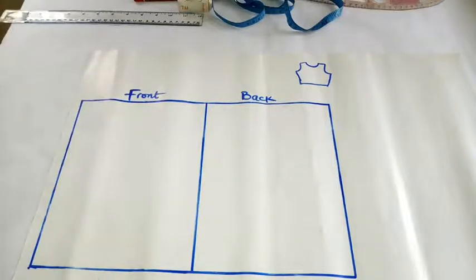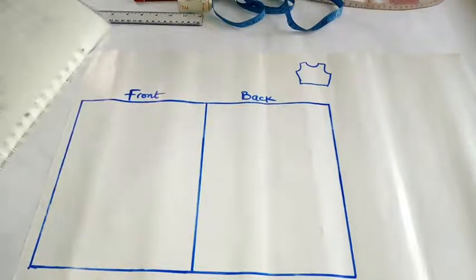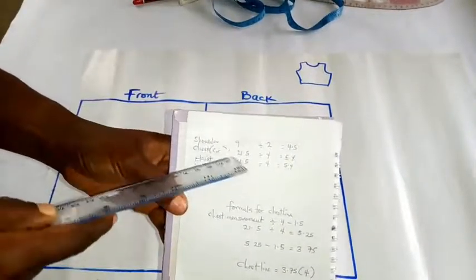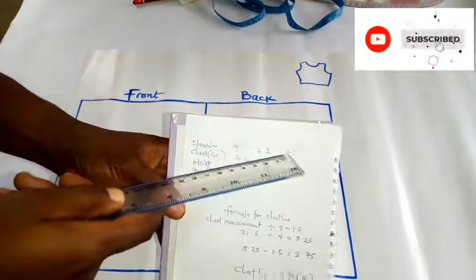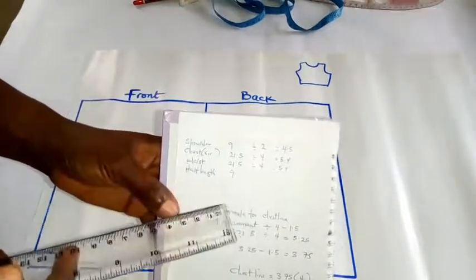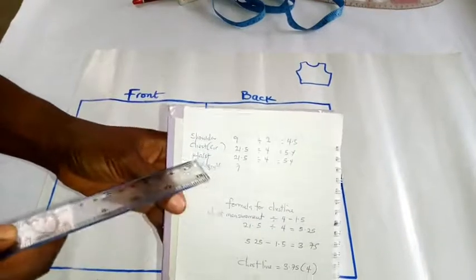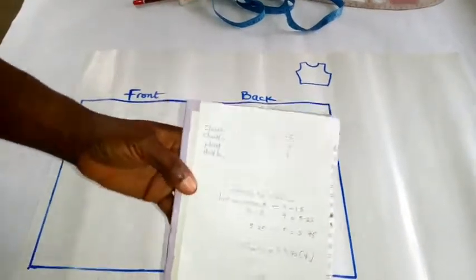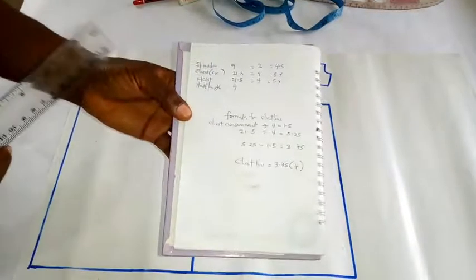The next thing we're going to look at is the measurements that we'll be needing. We need our shoulder measurement divided by 2, which gives us 4.5. Our chest circumference will be divided by 4. Our waist circumference will be divided by 4. Then our half length will not be divided at all.